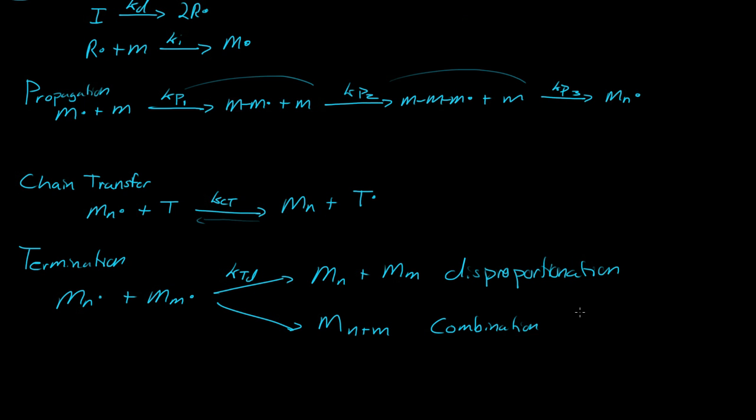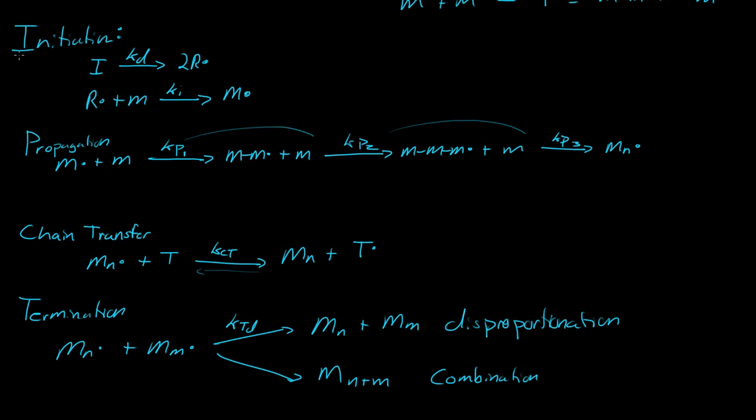So these are the general mechanisms for polymerization. The really big things you need to focus in on is initiation, propagation, and termination. Chain transfer isn't always going to occur, but it may. And that might be a little sidestep. But make sure you know initiation, propagation, and termination.